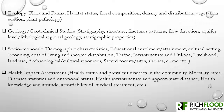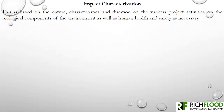The geological indicators range from stratigraphy, structure, flow direction, aquifer level, and stratigraphic properties. The socioeconomic component ranges from demographic characteristics, traffic, livelihoods, land use, sacred forests, and cultural settings. The health impact assessment ranges from health status and prevalence of diseases in the community to mortality.